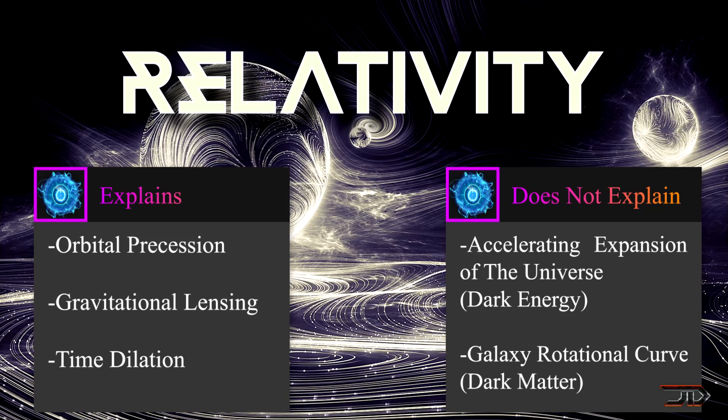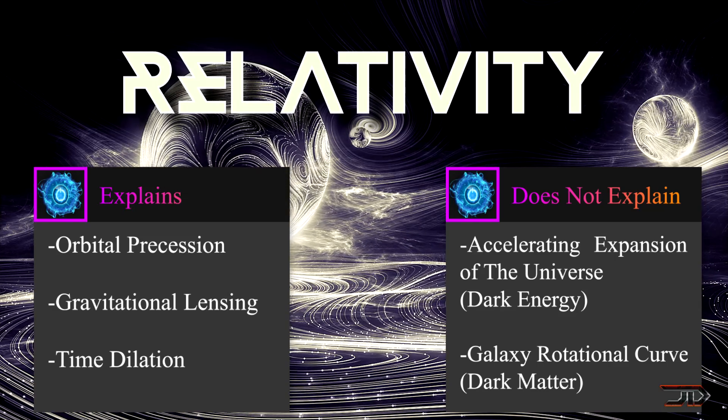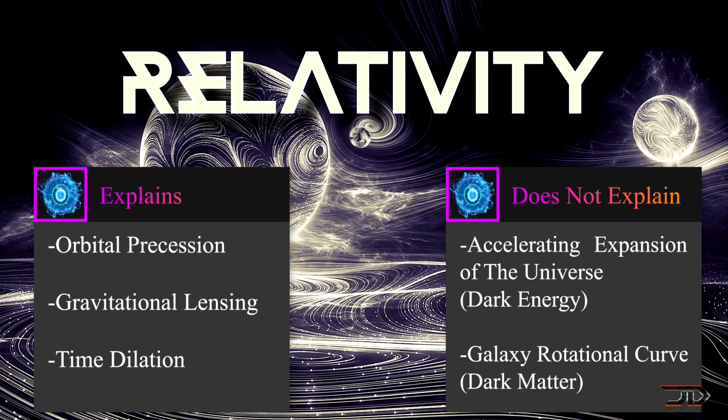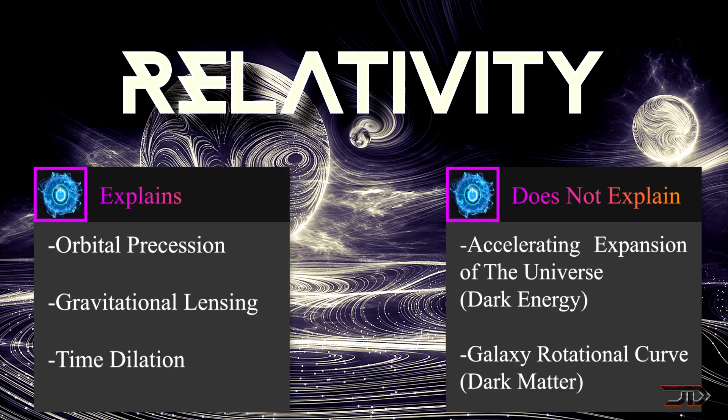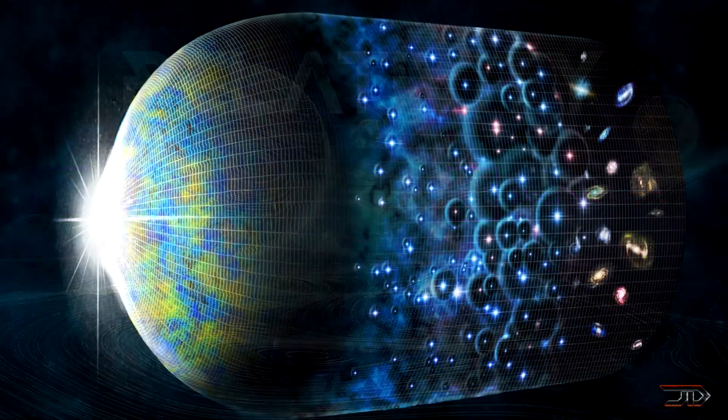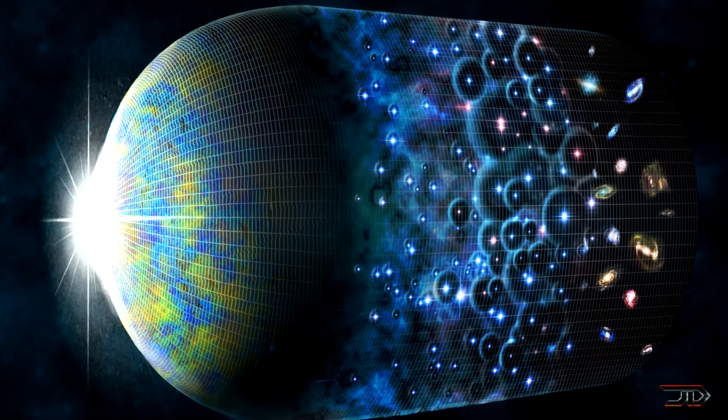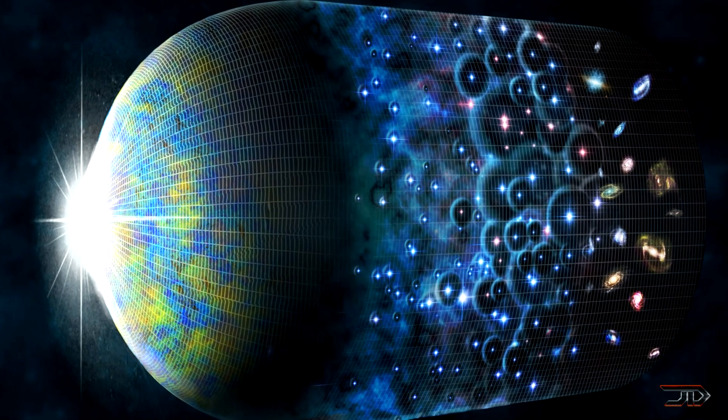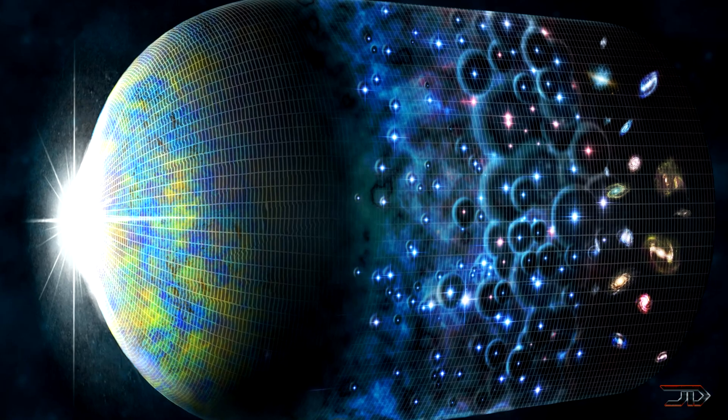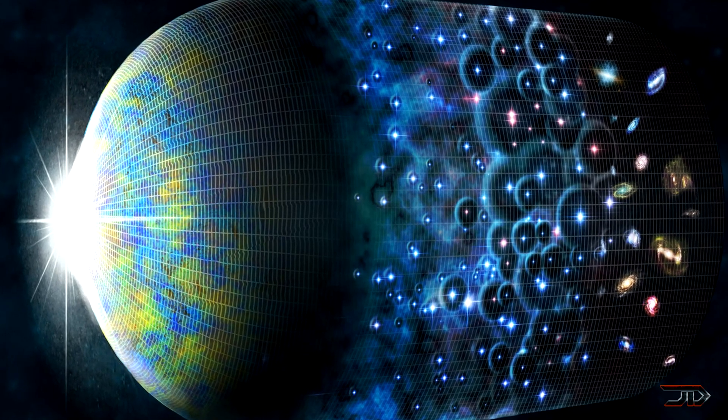So this has led to a claim of dark energy and dark matter, respectively, but we have no idea what this stuff is. And this is kind of a mind-bender, because Einstein's field equations are very accurate in specific applications, but it's not explaining what's happening in the universe, and that's a big problem.